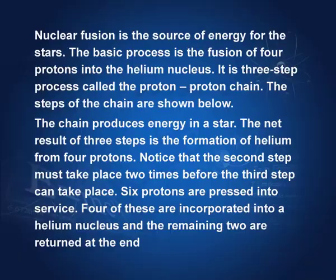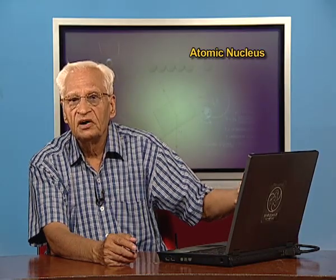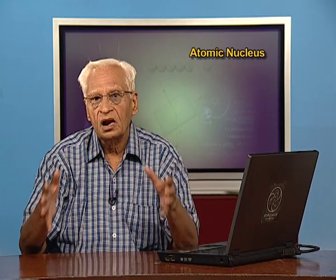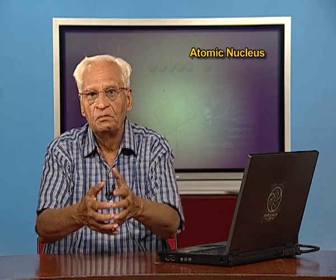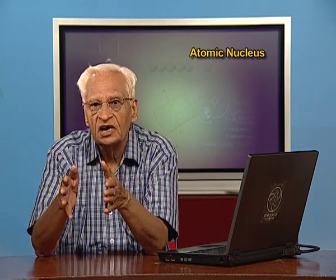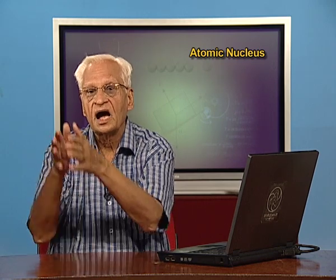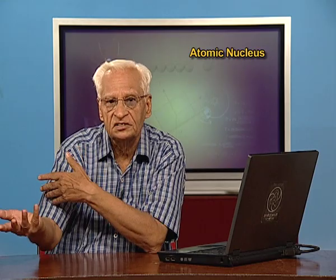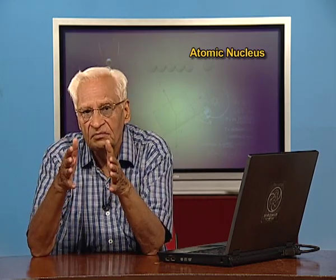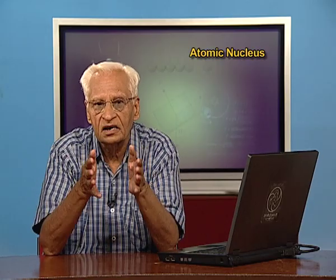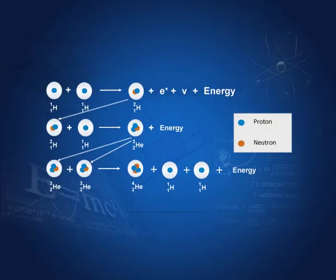Nuclear fusion is very important because it is the source of energy that powers the sun and other stars. What happens is that four protons combine to form a helium nucleus — that is, four hydrogen nuclei fuse to give a helium nucleus. The helium nucleus has higher binding energy than the four hydrogen nuclei, so there is a release of energy. The mass of the helium nucleus is smaller than the mass of the four protons combined, and the difference is released as energy.